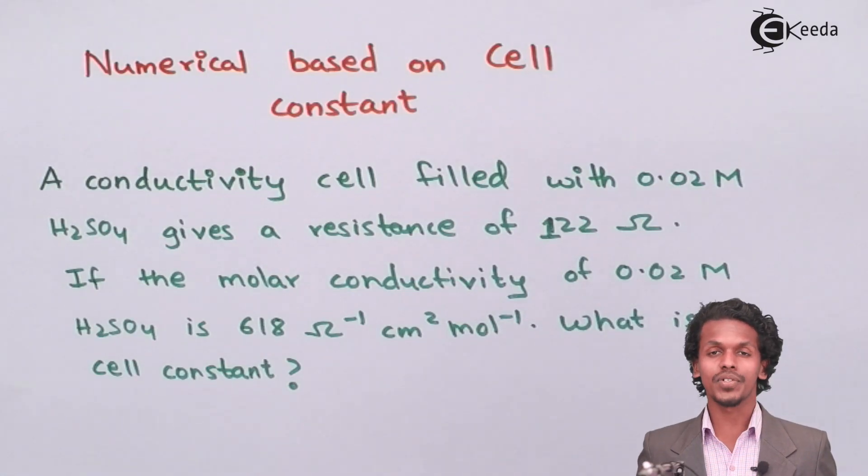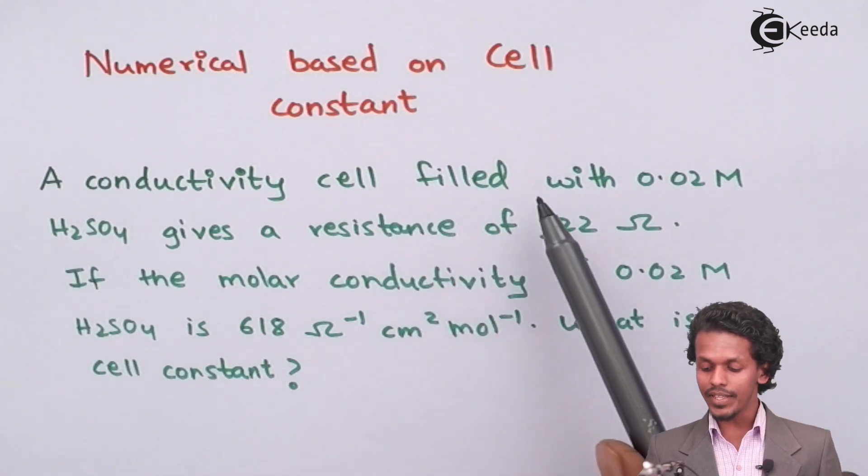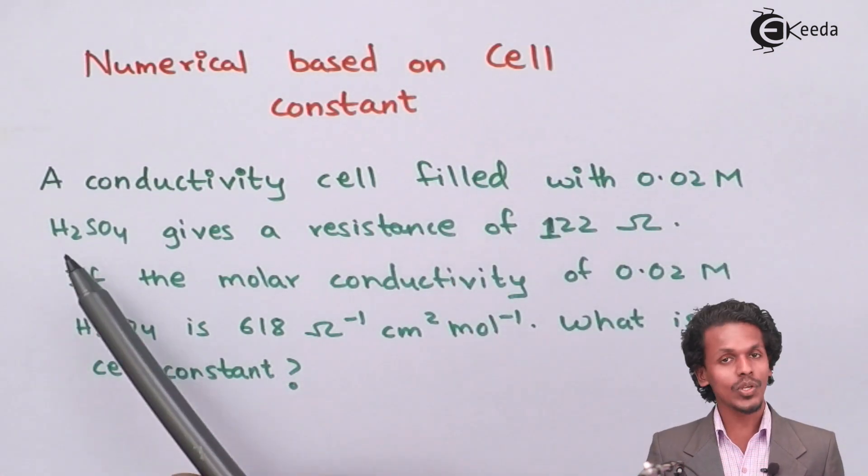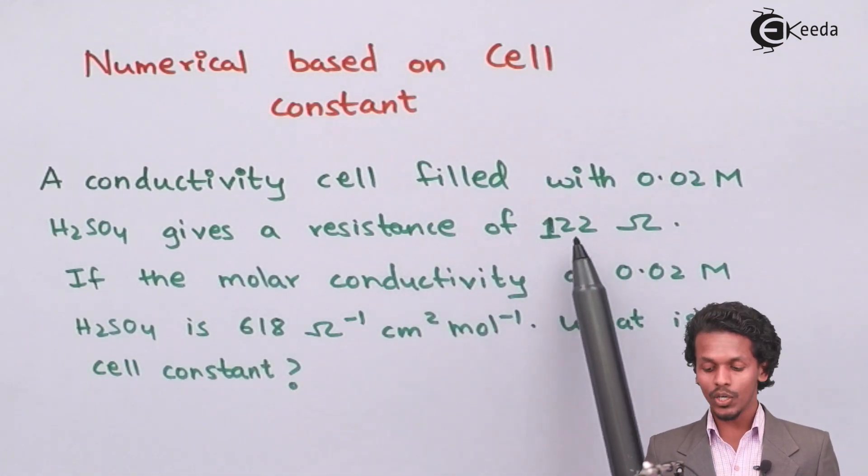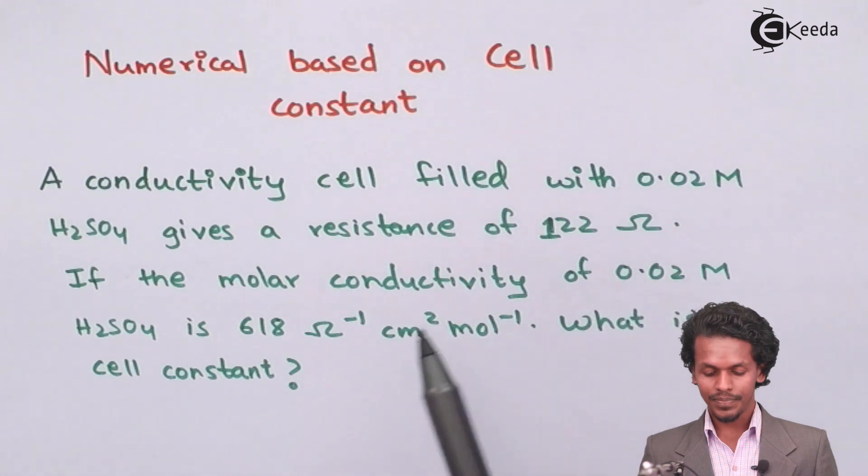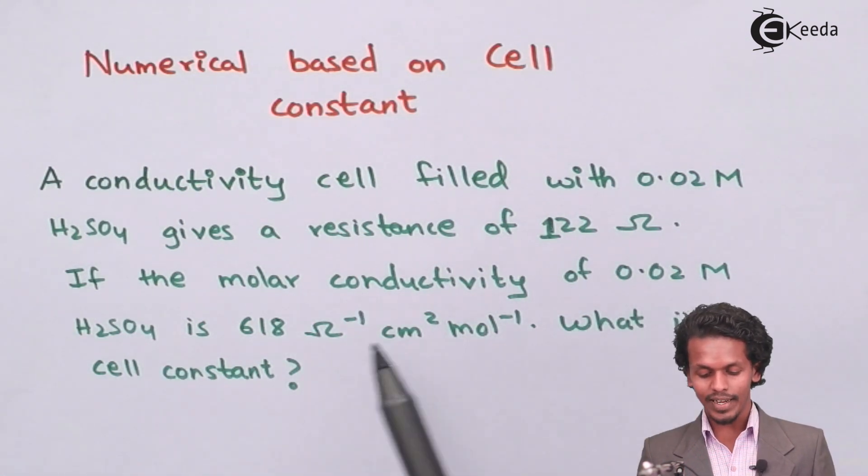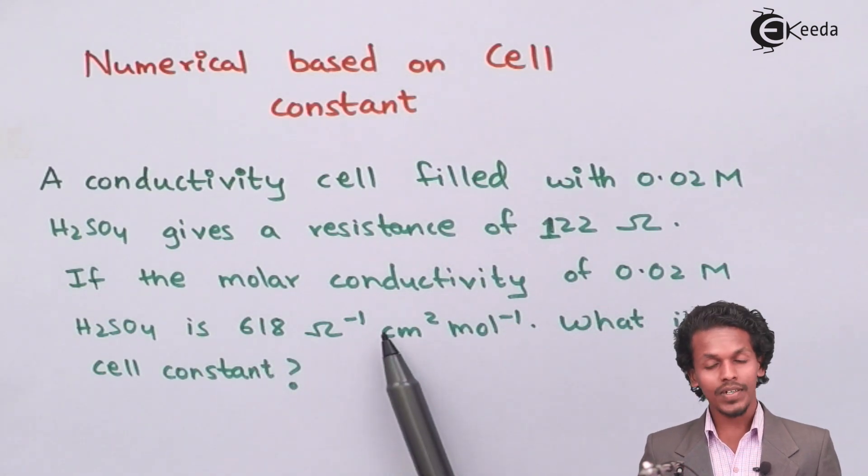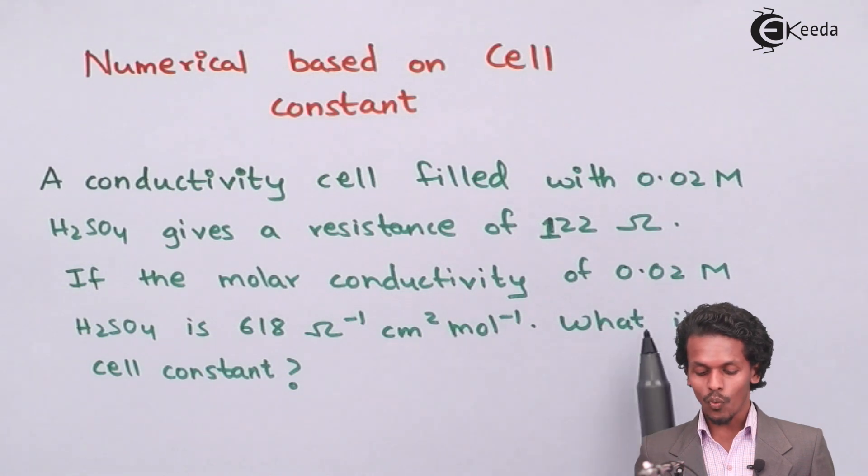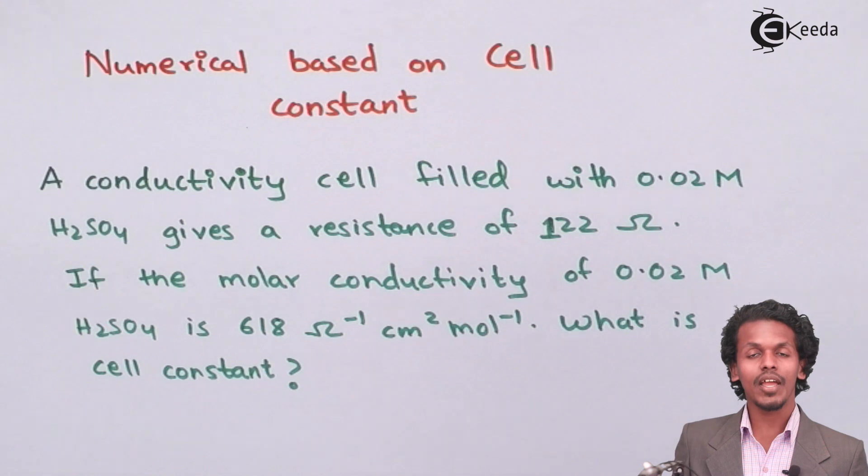As mentioned in the above question, there is a conductivity cell filled with 0.02 molar H2SO4 solution that gives a resistance of 122 ohms. If the molar conductivity of 0.02 molar H2SO4 is 618 ohm inverse centimeter square mole inverse, what is the cell constant?